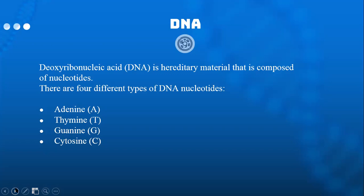There are four different types of DNA nucleotides: adenine, thymine, guanine, and cytosine. Adenine has a property that when it's in the double helix, it is always found opposite of thymine. So adenine and thymine pair, one on each strand, to form AT pairs.